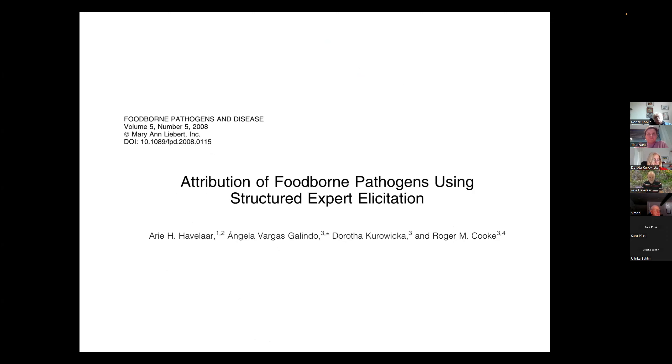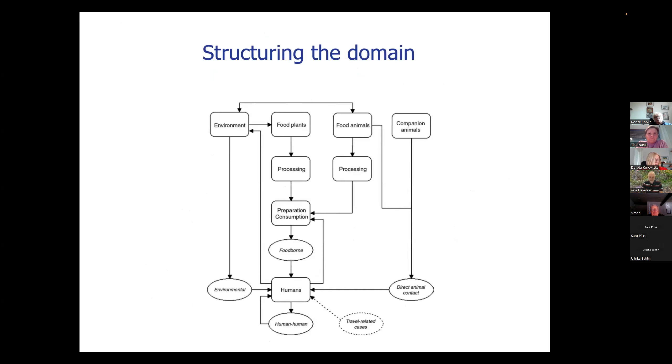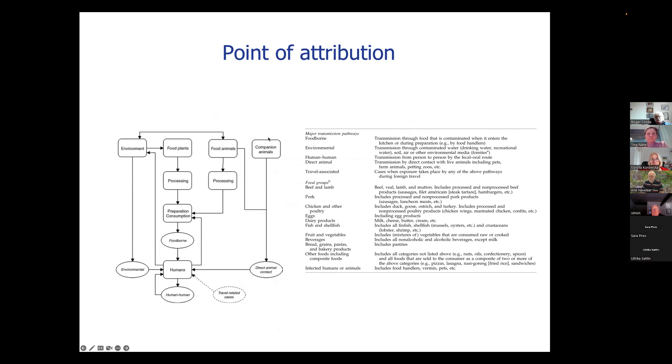So now going to some of the studies that we did. This is the first study published in 2008 for the Netherlands. And I'll use that first to sort of structure the domain a little bit more. And this structure has been used by all the other studies that followed, at least that I'm describing in this way. So again, we have this domain from the reservoirs now slightly broader, the environment, plants, animals, food and companion animals going for food through some kind of processing, preparation, consumption, and then leading to human exposure. And we split it up here in foodborne, environmental, human to human, direct animal contact. And separately looked at travel related cases, which are not under the control of the national authority. So you want to sort of separate them out. A lot of national studies separate out travel related cases or something that's not under their control. So, and then a very important decision is the point of attribution.